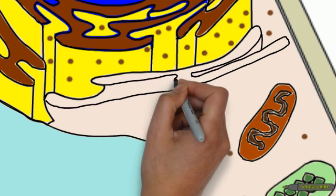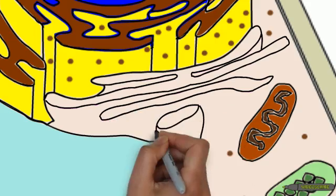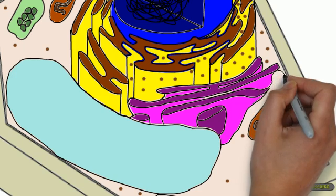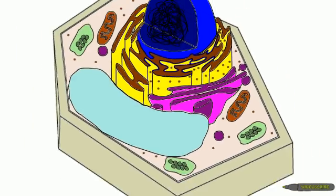The Golgi complex is the packaging center for the cell. It packages compounds that the cell makes inside membranes for delivery to where they are needed. It also packages waste to be pushed out of the cell. Vesicles are the packages.